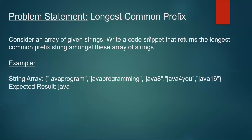In this video we are going to discuss how to find the longest common prefix among a given array of strings. A prefix is a substring at the beginning of any string. In the example array we have strings like 'Java program', 'Java programming', 'Java 8', and so on. We can clearly see the common prefix 'Java' in all the strings, and it is also the longest common prefix possible. That is what we need to output as the expected result.